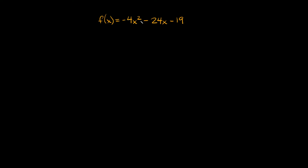So we have f of x is equal to negative 4x squared minus 24x minus 19. So the first thing you want to look at is just this first coefficient that's next to the x squared. This number tells you if your parabola opens up or down. If this number is positive, it opens up. And if it's negative, like in this case, it opens down. So for this problem we're going to be looking for a maximum point, because the vertex is right there at the highest point.